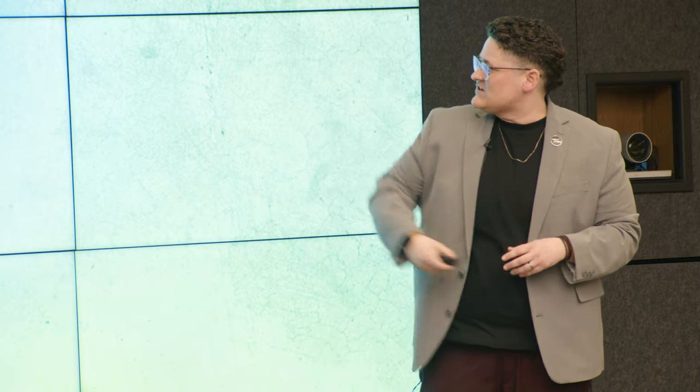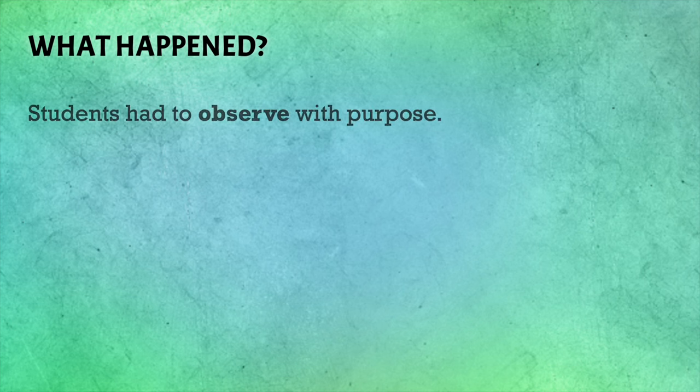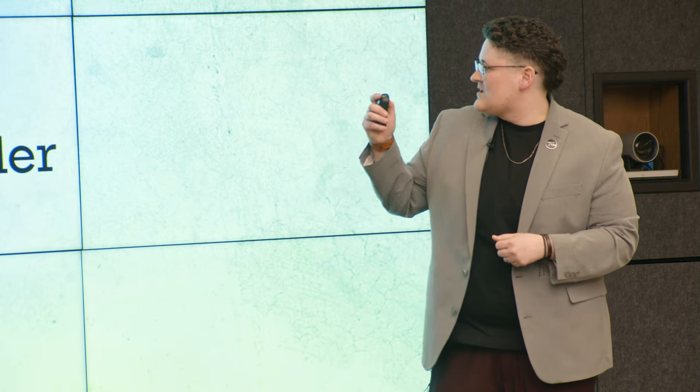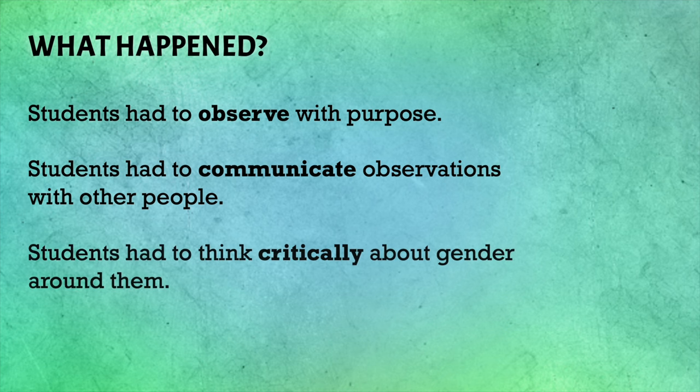After looking at the photos and discussing captions, what happened? First, students had to observe with purpose. Dogs are all over Union's campus — we interact with them and don't think about it. Flyers on campus — we don't really think about these things. They had to observe them with purpose, think about how to use their text and photos to communicate what they'd observed, and think critically about gender around them — things they didn't associate with gender, that we just kind of assume happen.